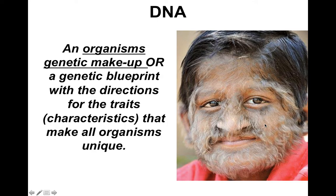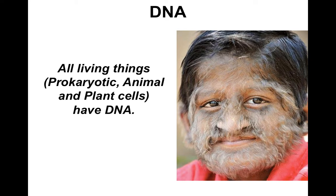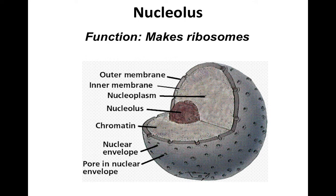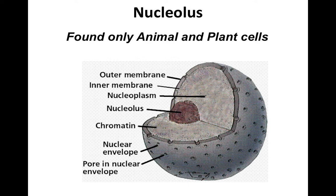Who has DNA? Hopefully you guys remember that DNA is a characteristic of life — every single living thing is going to have it. That includes prokaryotic, animal, and plant cells. The nucleolus is where we're going to make the ribosomes. It will come up when we discuss protein synthesis. It's that darker circle inside the nucleus, kind of like the yolk, and it's only found in animal and plant cells.